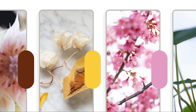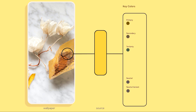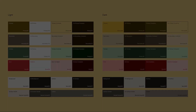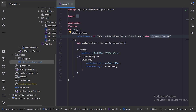Dynamic color is a feature introduced in Android 12 that lets your apps match your wallpaper's color. Android takes a look at your wallpaper and picks out the main color — this is called the source color. Then it takes that color and generates five key colors, which provide the basis for light and dark themes, giving your device a personalized and cohesive look.